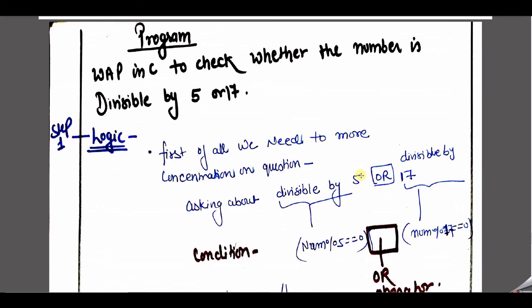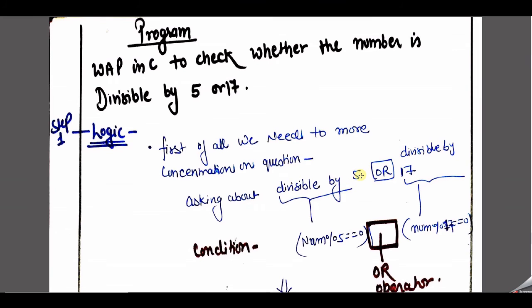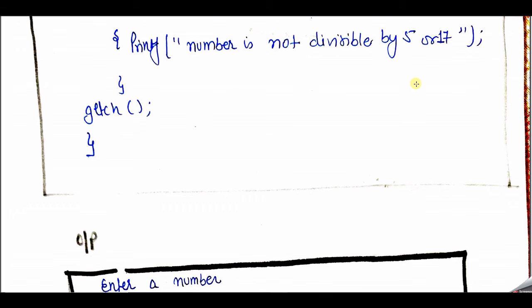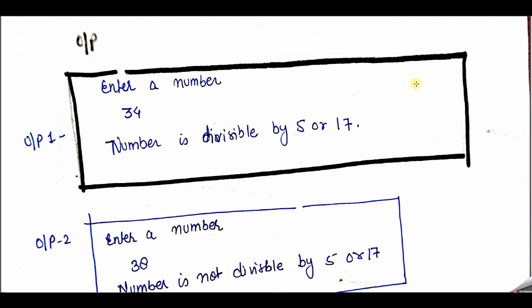I am also going to again explain the divisible-by-5-or-17 question — now with if-else. If the number is divisible by 5 or 17, show the message 'yes, your number is divisible by 5 or 17'. And if it is not, then show the message 'the number you entered is not divisible by 5 or 17'. So here both situations are covered using if-else.